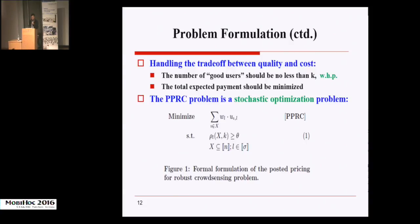To handle the trade-off between quality and cost, we formulated the Posted Pricing for Robust Crowdsensing problem, PPRC for short. A proper posted price should be selected such that the number of good users would be no less than the predefined constant K with high probability, while the total expected payment should be minimized. We can see that the PPRC problem is actually a stochastic optimization problem.